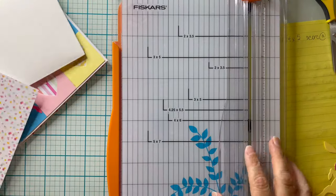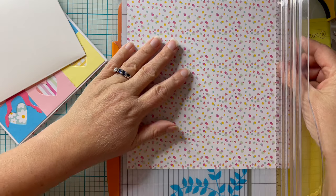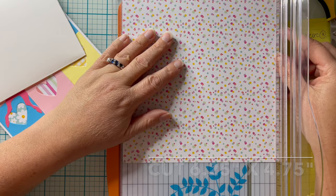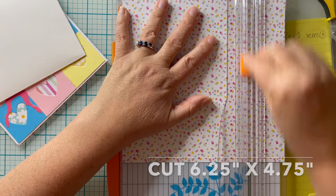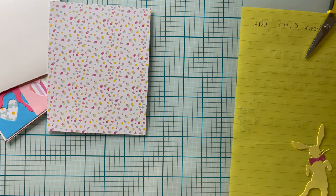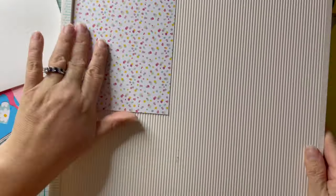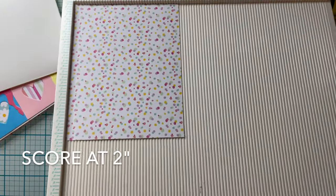Okay so the liner is going to be cut at six and one quarter inches by four and three quarter inches. We're going to score along the top of the four and three quarter inch side at two inches.